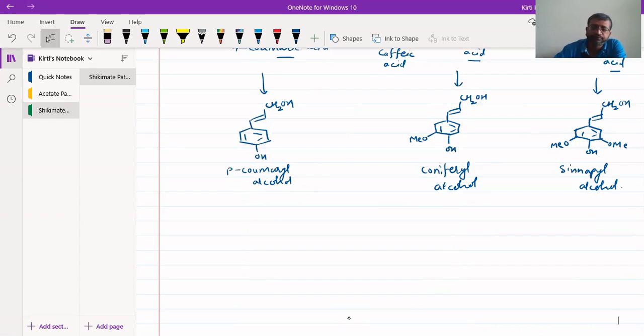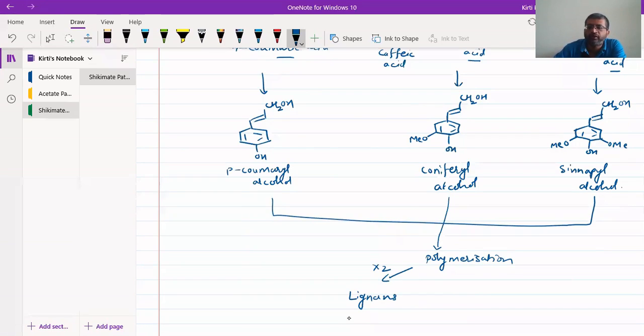If there is polymerization of degree 2, that is dimerization, then we call these compounds as lignans. If it is polymerized to n number of monomeric units—monomeric units like cumeryl alcohol, coniferyl alcohol, and synapyl alcohol—and if n number of monomeric units are taken together, then that will give rise to lignins. So the cinnamic acid and its derivatives are being utilized for biosynthesis of lignans and lignins.